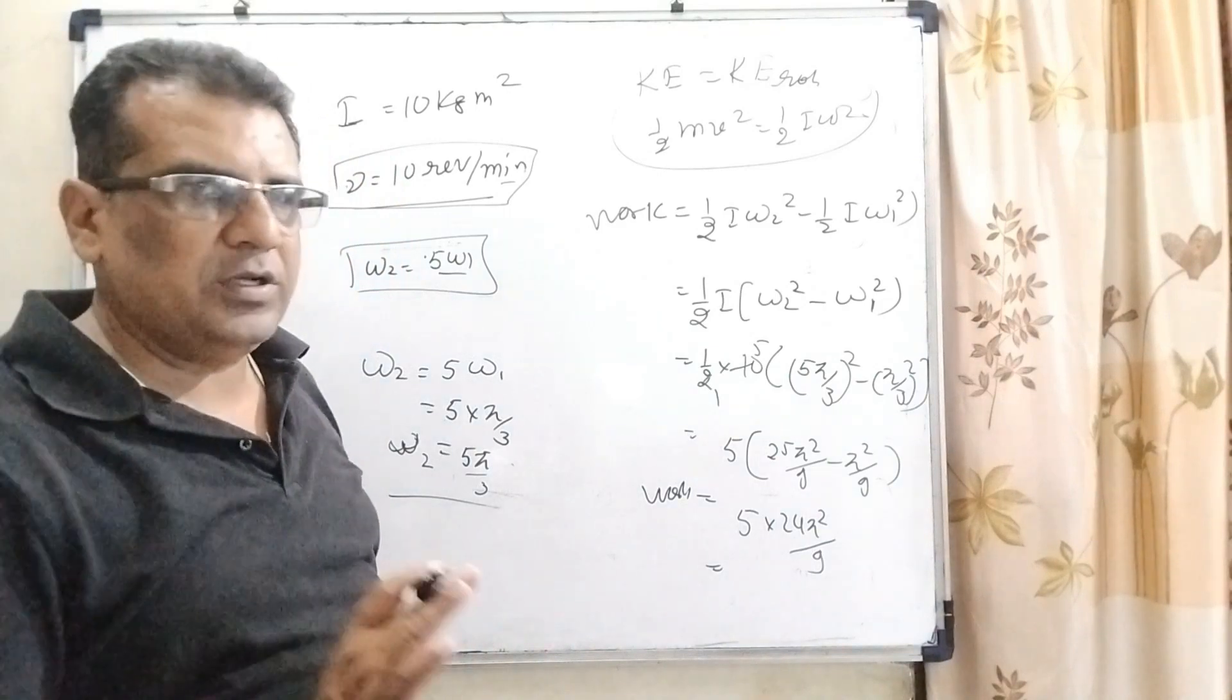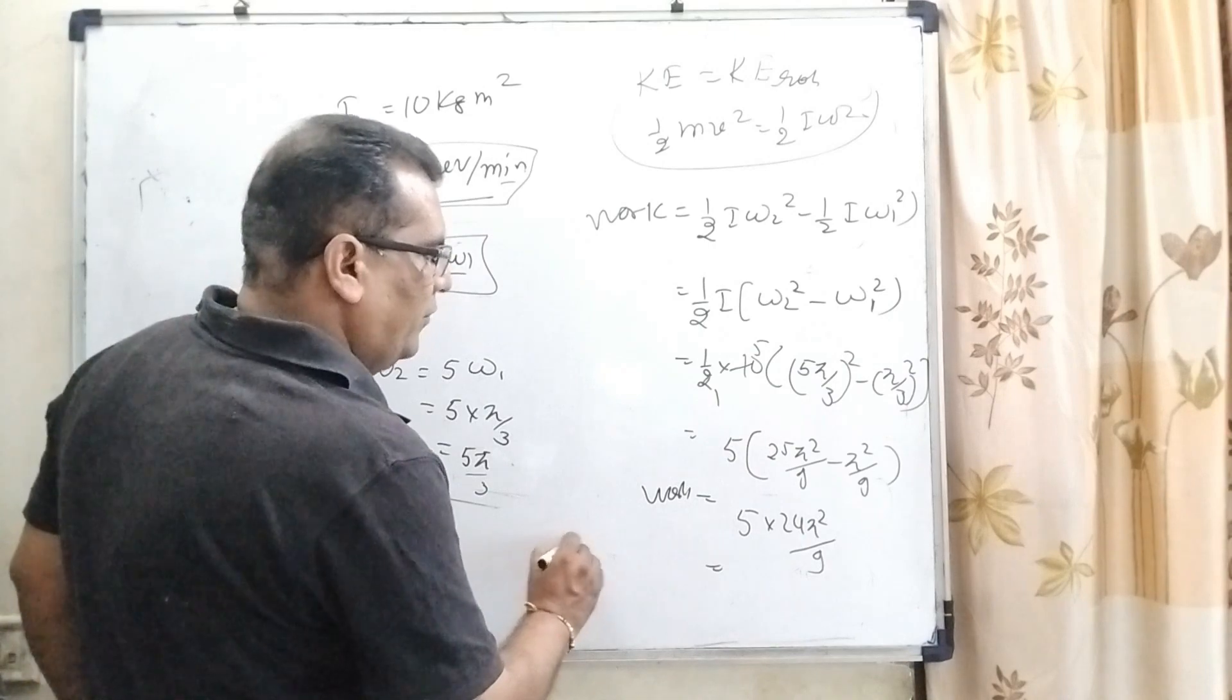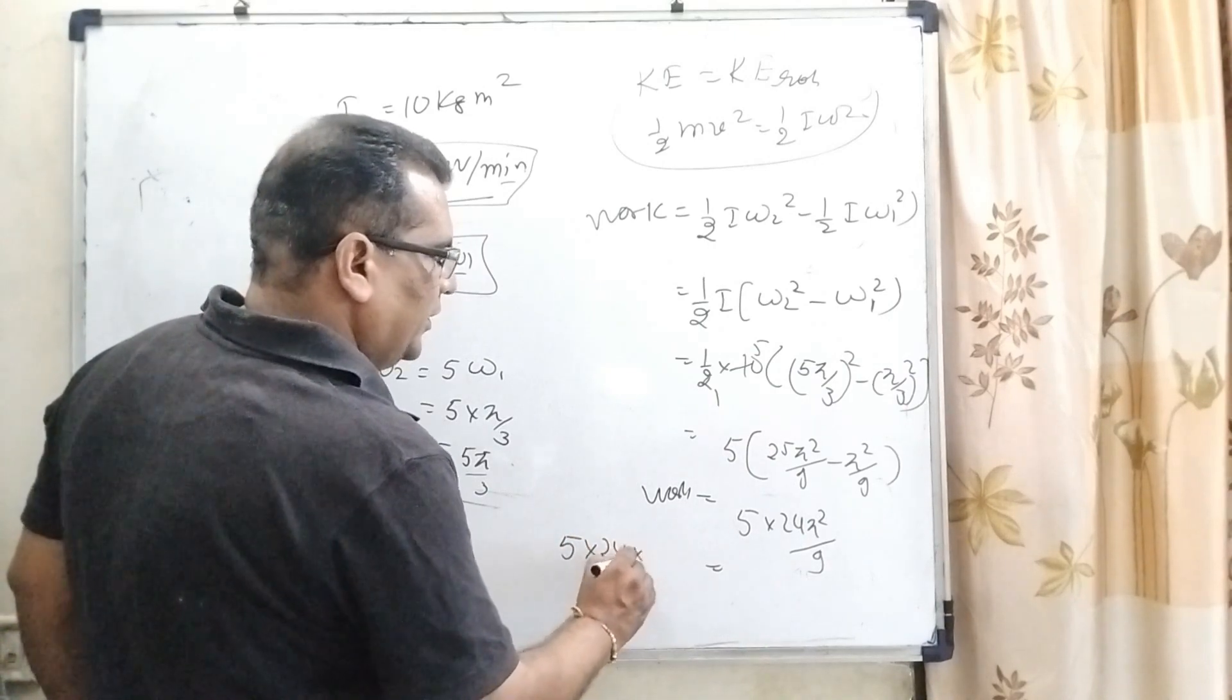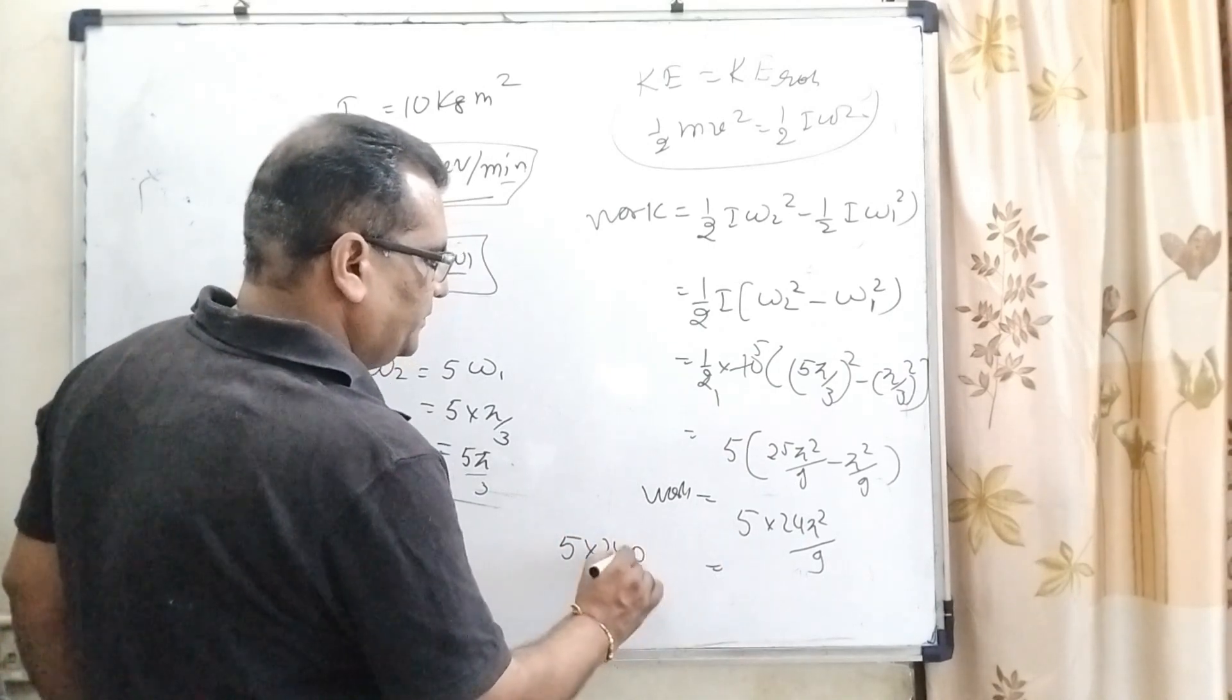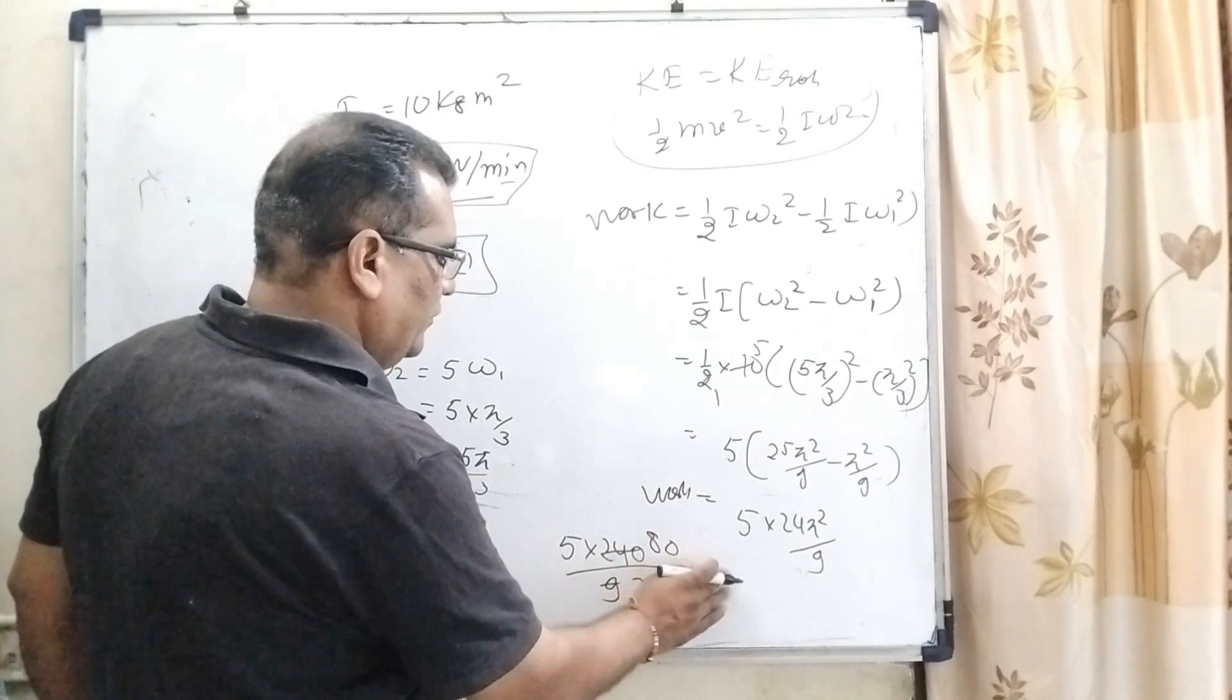if we have calculated approximately, so, pi square can be written as 10. So, 5 into 25 minus 1 into 10, that is, 24 into 10 divided by 9,